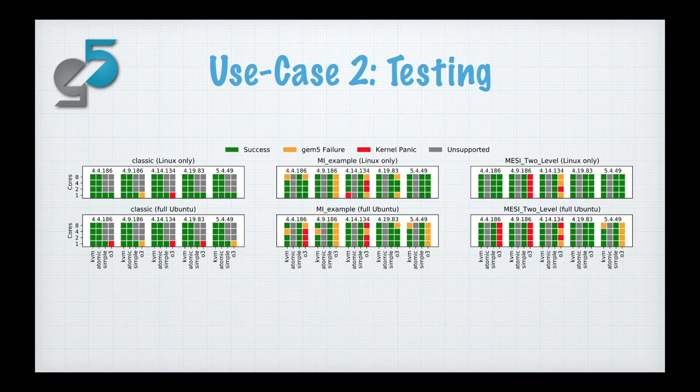This is the result we get. Without going over all of it in huge detail, this is a simple visualization showing the status of GEM5 for every single configuration we discussed. There are a lot of data points, but once this is running, you don't have to think about anything — it's all automated.